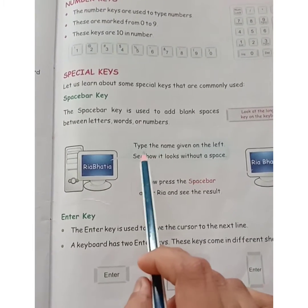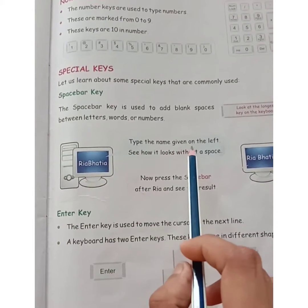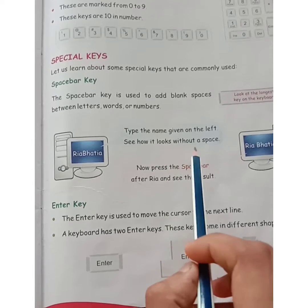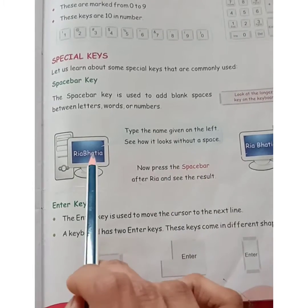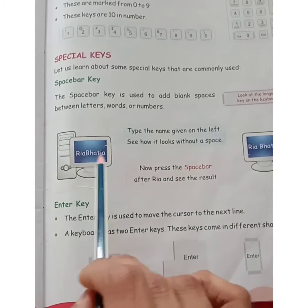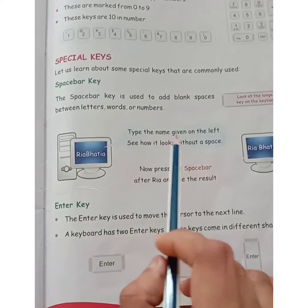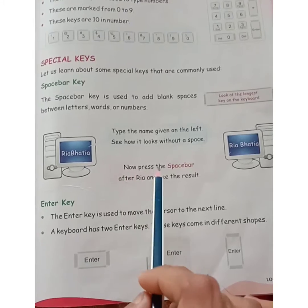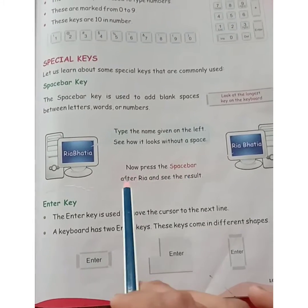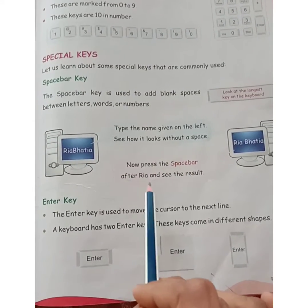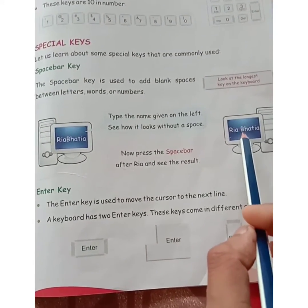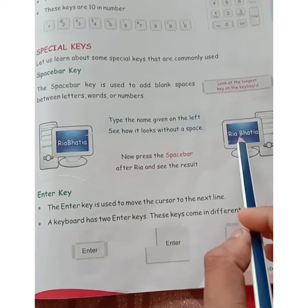Type the name given on the left and see how it looks without a space — for example, Riyabatya. Now press the spacebar after Riyabatya and see the result. After Riyabatya, you will get the space.